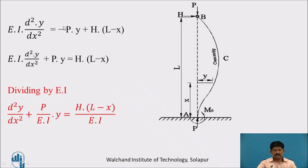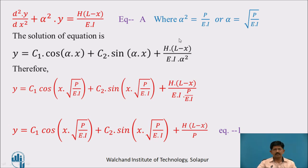Taking the minus term to the left-hand side: EI d²Y/dx² + P·Y = H(L − X). Dividing throughout by EI: d²Y/dx² + (P/EI)·Y = H(L − X)/EI. Now putting P/EI = α², therefore α = √(P/EI). Substituting gives: d²Y/dx² + α²·Y = H(L − X)/EI.